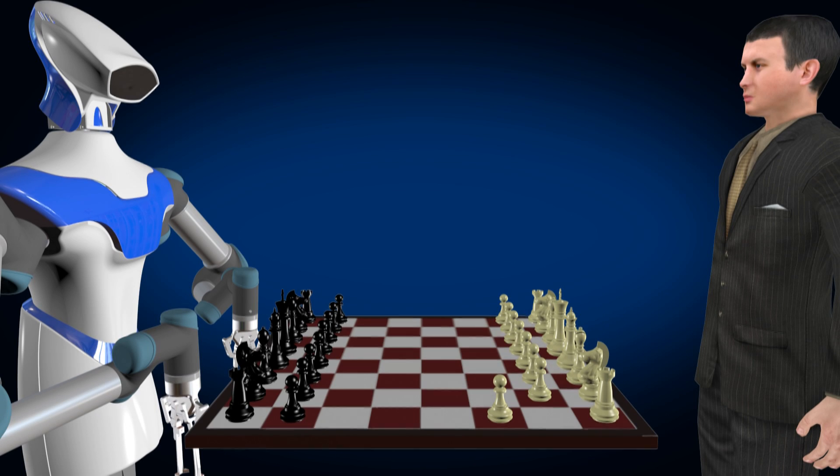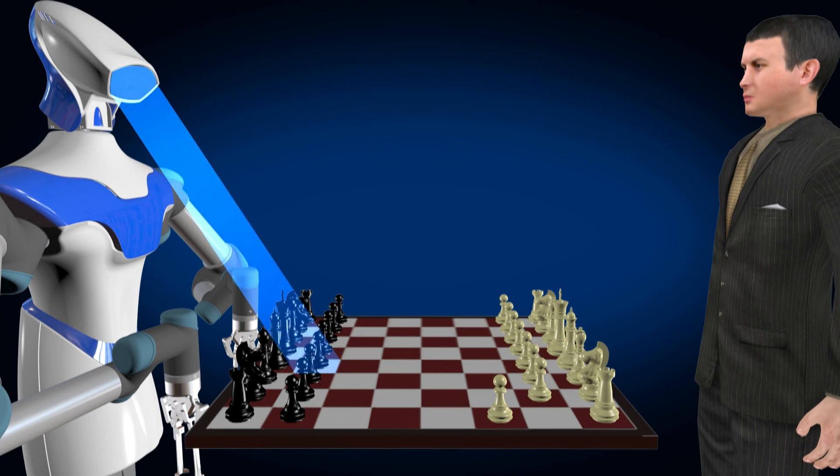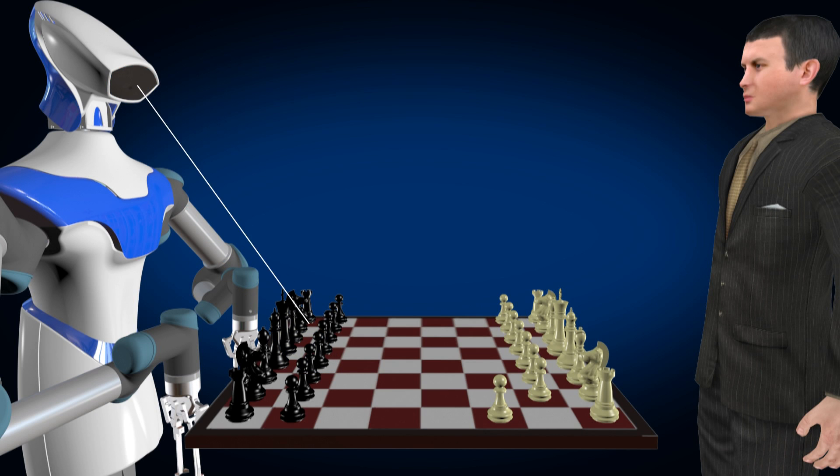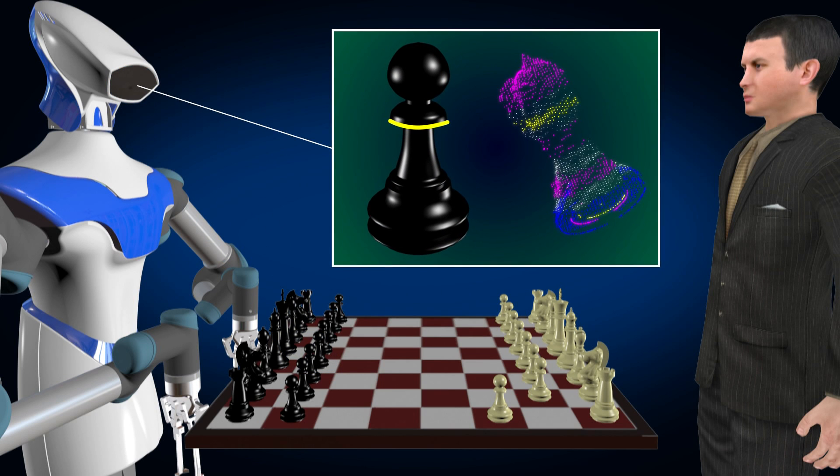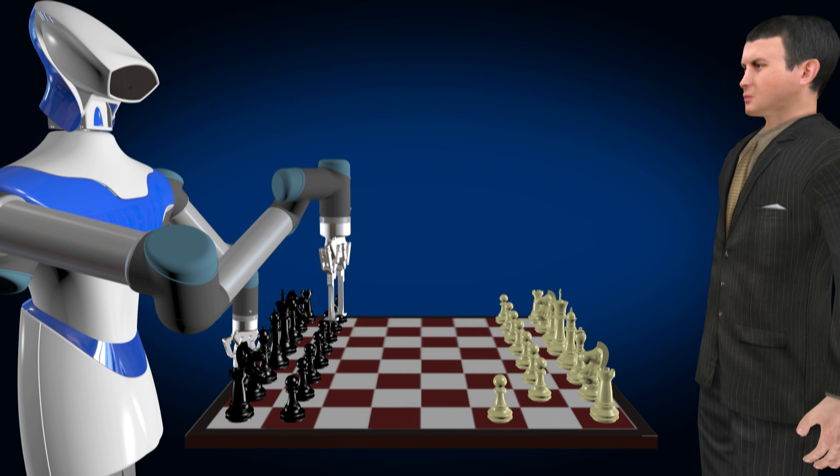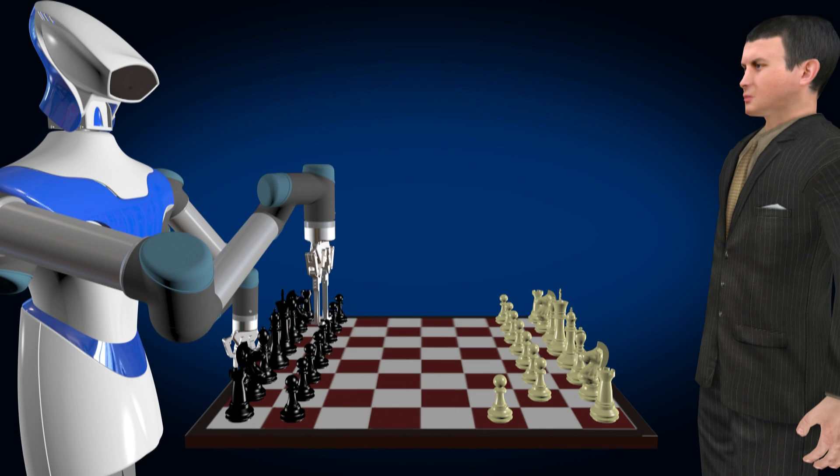When it's the robot's turn to move, IVS first precisely calibrates the robot arm's 3D spatial positioning. It then detects the video image of the piece the robot will move next and switches to 3D spatial positioning.